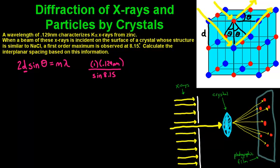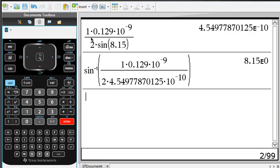And then we're going to divide it by sin theta and theta is 8.15. And when we do that, so we took the first order maximum which is 1 times the wavelength, 0.129 nanometers and then times 2 times sin theta.